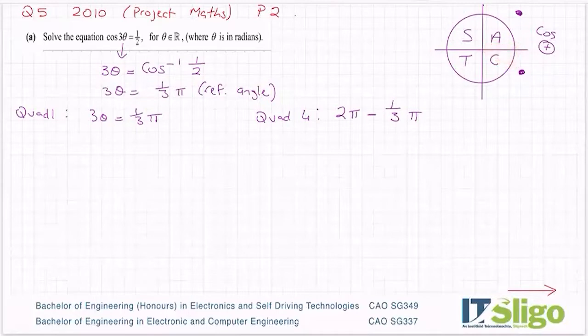Your reference angle is always with respect to the horizontal. When you're in the fourth quadrant, your angle is always anticlockwise and it always starts over here, which is the positive sense of the x-axis. That's why it is 2π minus your reference angle. So 2π, that's 6/3, minus 1/3 is 5π/3.